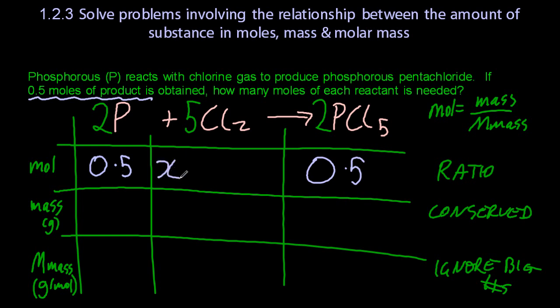Now, if we say that the moles of chlorine is x, you can do a simple ratio to work out x. 5 over x is 2 over 0.5, just by comparing the coefficients to the moles. And when you solve that, the moles of chlorine is 1.25.